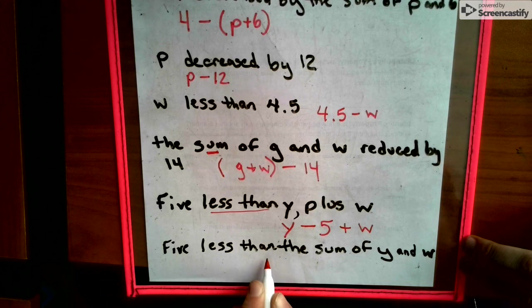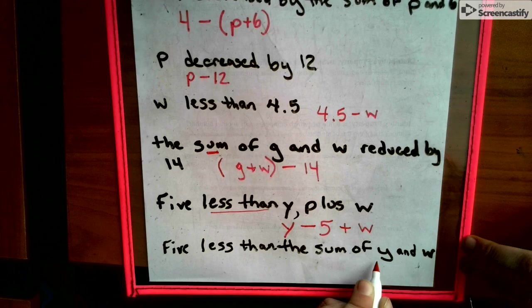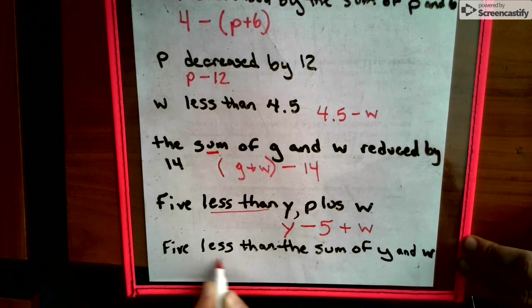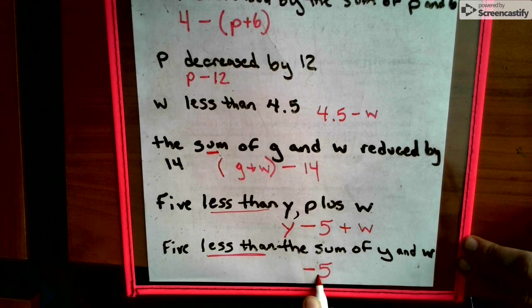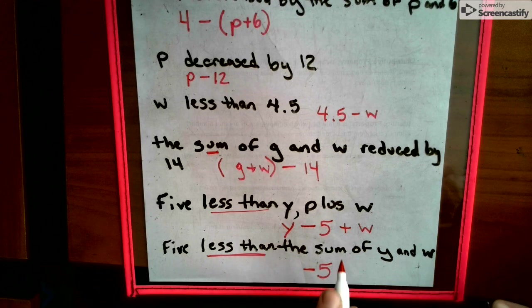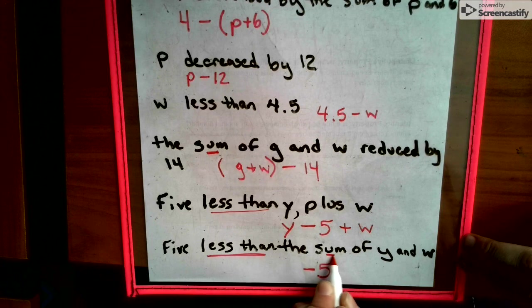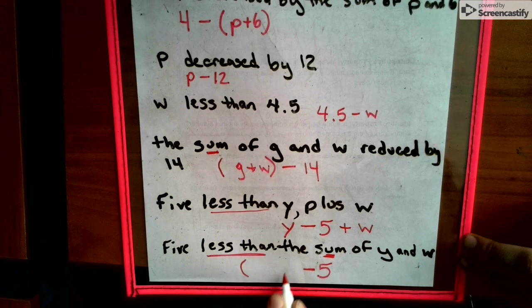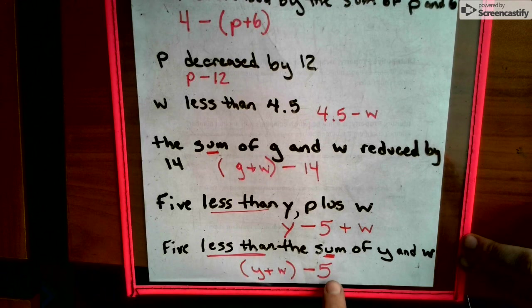5 less than the sum of Y and W. 5 less than - there we go again. So that minus 5 is at the end. But we want to take 5 less than the sum, so we need an answer to the addition problem of Y plus W first: parentheses Y plus W, then minus 5.